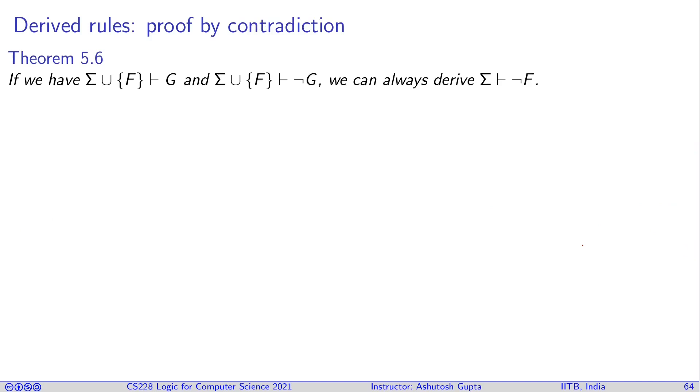Let's look at the contradiction. So let's suppose sigma union F proves G. Sigma union F also proves not G. This means sigma union F proves contradiction. Then we can always derive not F. So let's see how do we do that.